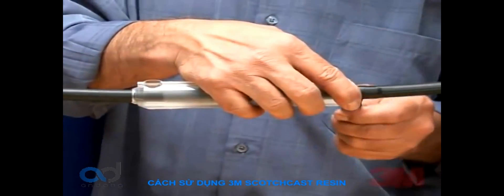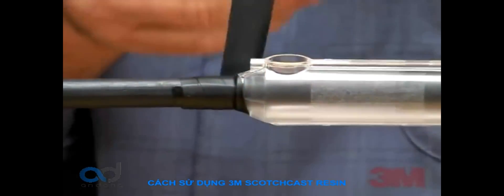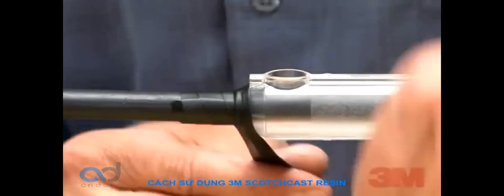Use the Scotch electrical tape 23 supplied in the kit to tape the ends of the mold body around the cable. It is important to stretch the tape to three quarters the original width.